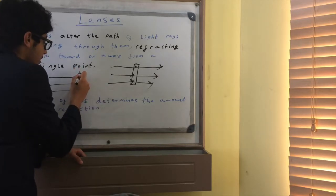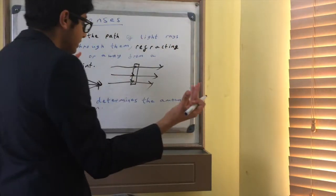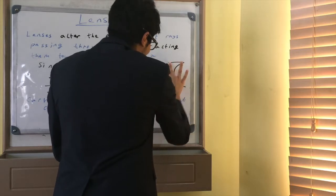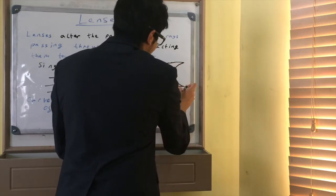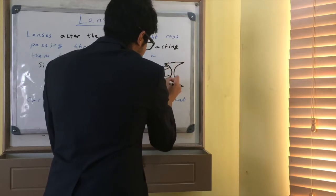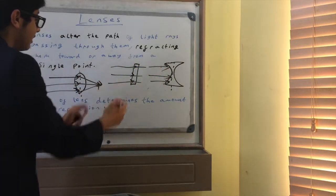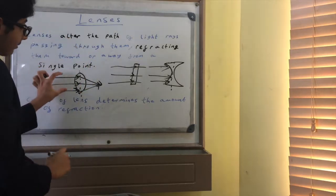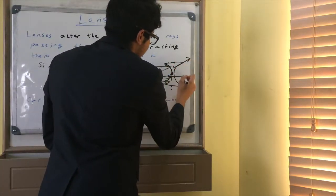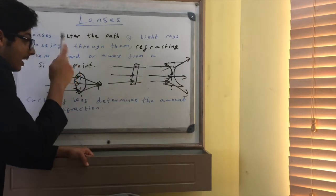If the lens is more curved, the light rays will be bent or refracted more — in this case towards a single point. But it doesn't have to be curved outwards; it could be curved inwards. This more inwardly curved lens refracts the light rays towards a single point, whereas the other lens refracts them away from a single point. That is the key difference between these two types of lenses.